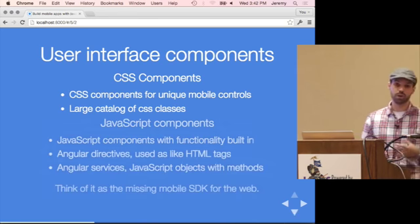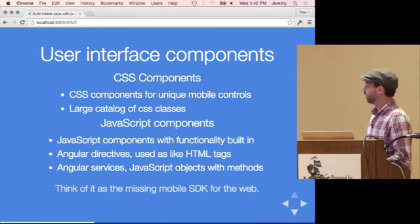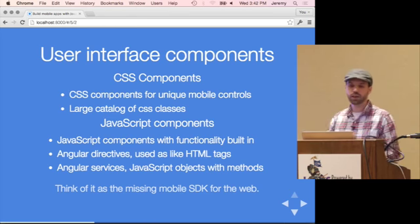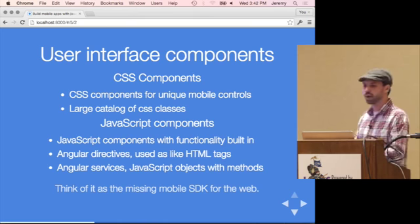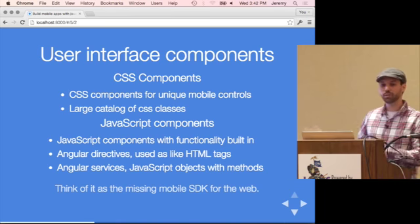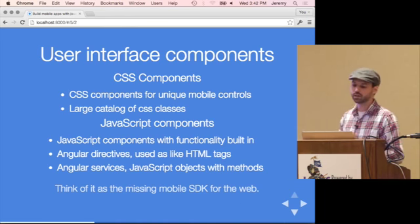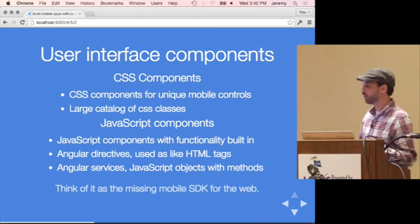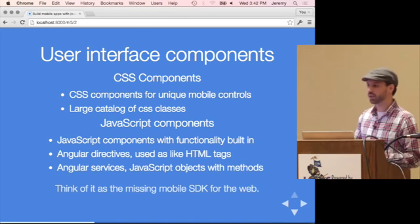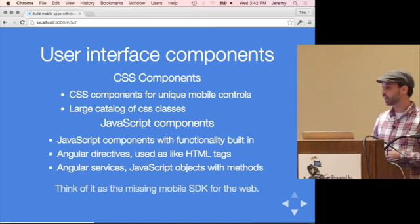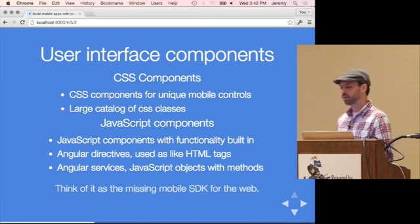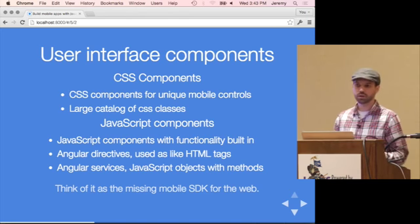Then you have JavaScript components which, if you're familiar with Angular, are Angular directives — but used like HTML tags. All you have to do is place an HTML element into your template and adopt the functionality abstracted inside the Angular directive. You don't have to worry about how the side menus work; you declare them and they're automatically functional. It also has a set of services — JavaScript objects that manipulate the page programmatically. It's really the missing mobile SDK for building apps with controls used on mobile apps.